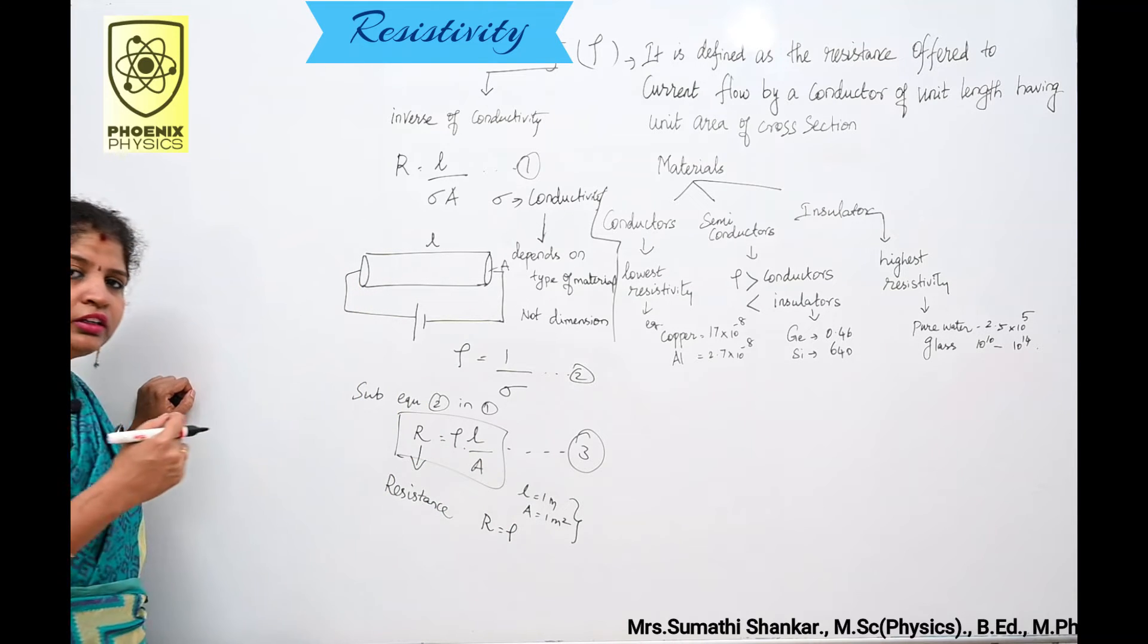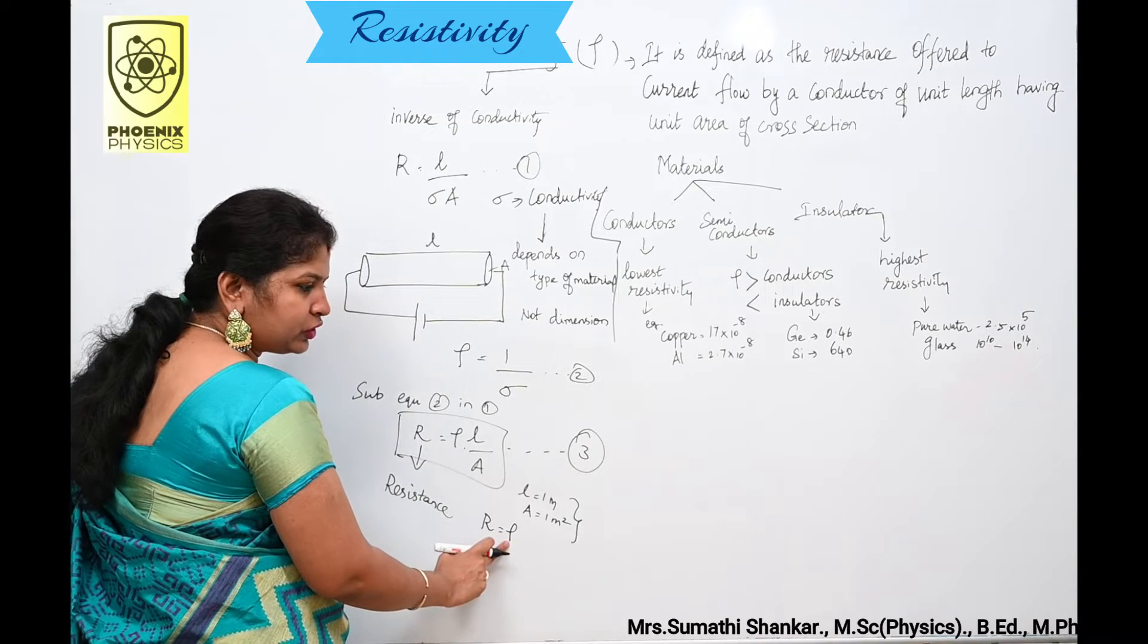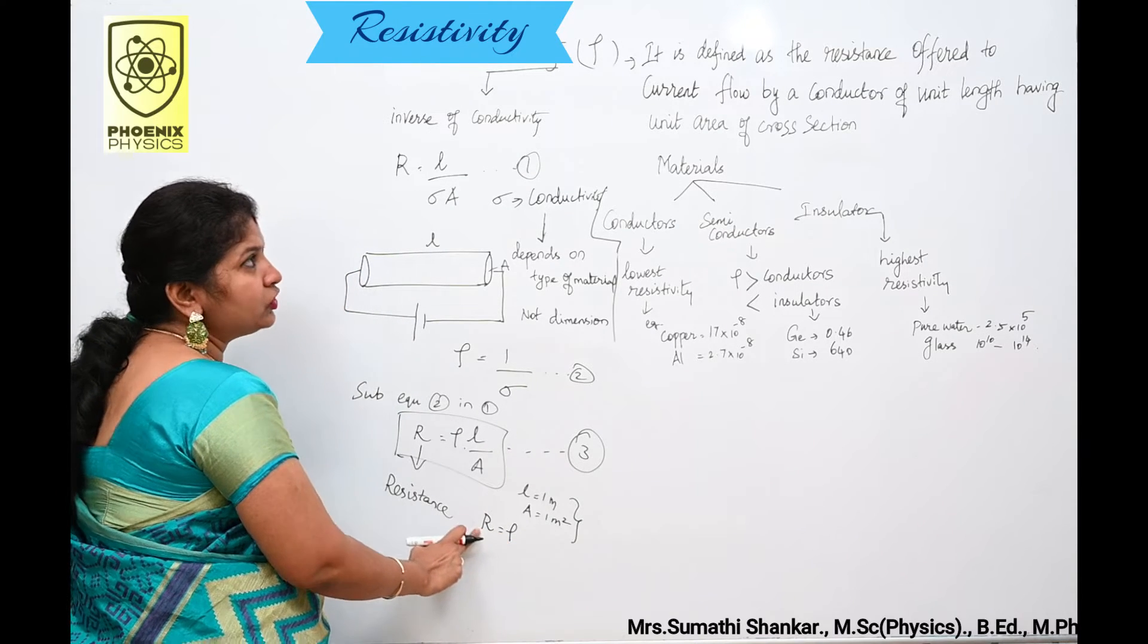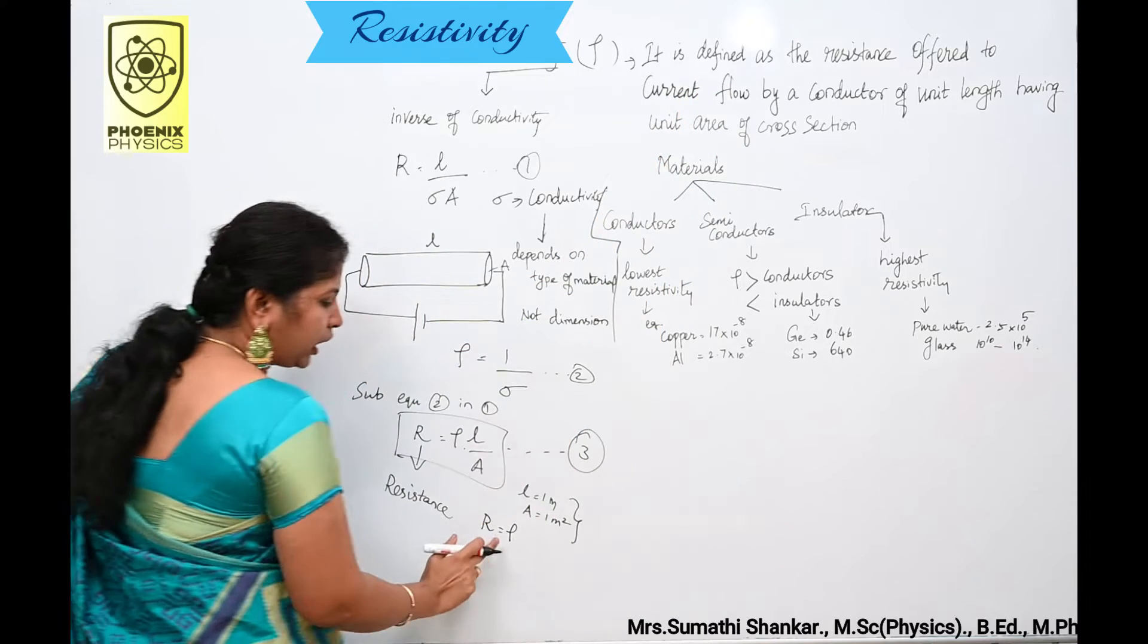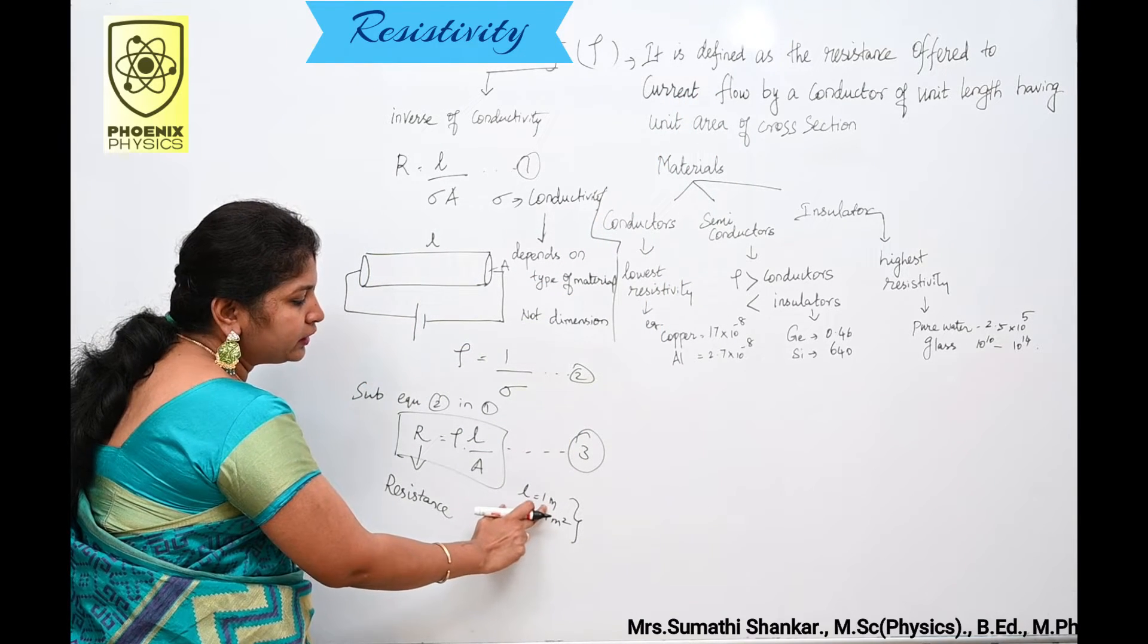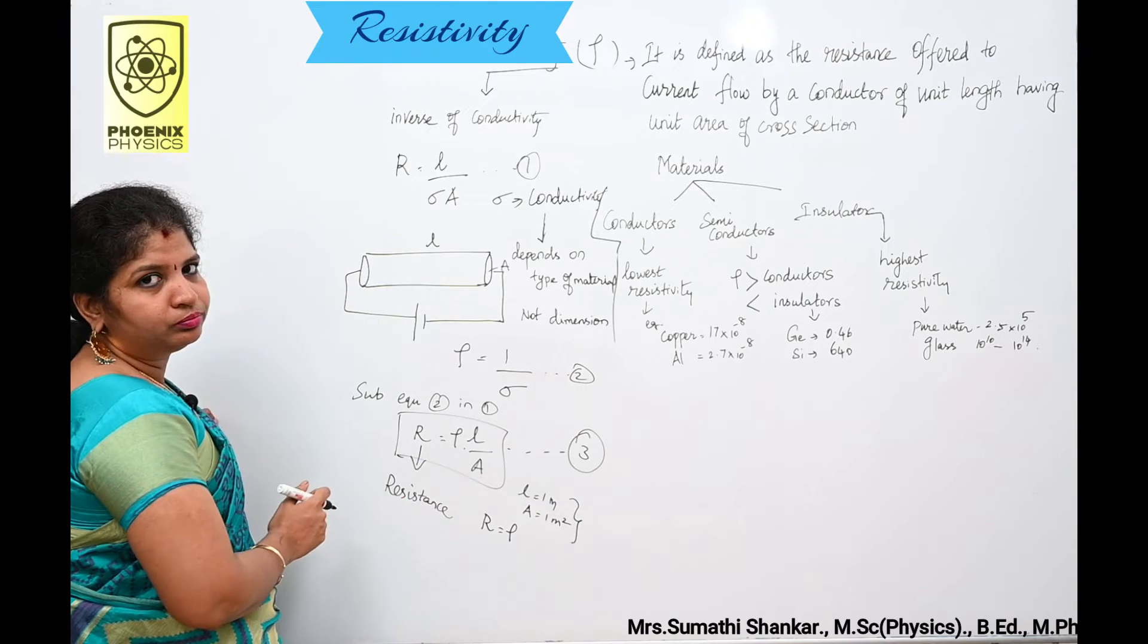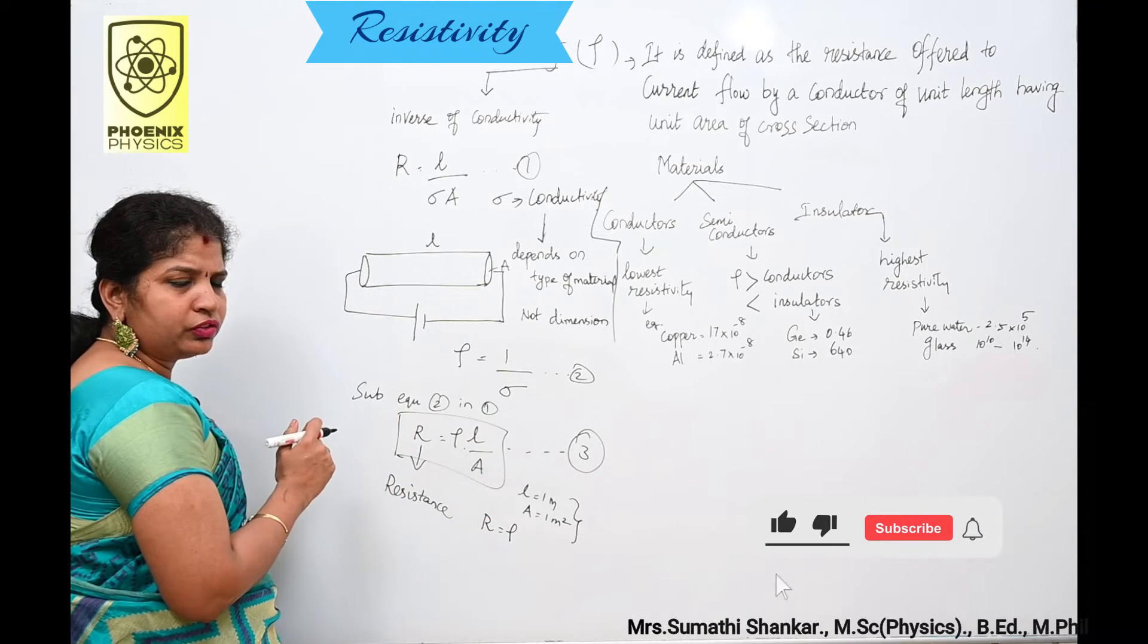Then how do you define the electrical resistivity of the material? The electrical resistivity is defined as the resistance offered to current flow by the conductor of unit length having unit area of cross section. This is the definition for resistivity.